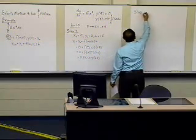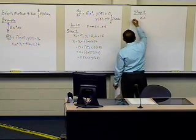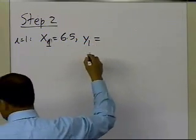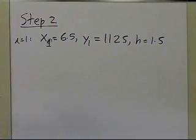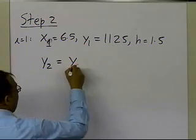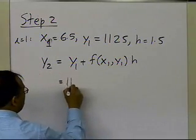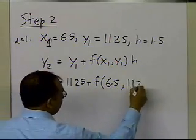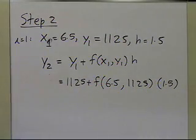So if we have step 2, we get x₀ is equal to, this is i equal to 1, it's corresponding to i equal to 1, so x₁ is 6.5, the corresponding value of y which we just obtained in the previous step is 1125, and h is of course 1.5. So we'll go back again and say, what is the Euler's formula for i equal to 1? y₂ is y₁ plus the value of the function at x₁, y₁ times h. What is y₁? 1125, plus the value of the function at x₁ which is 6.5, y₁ is 1125, times h which is 1.5. So we know everything about what we need to know in order to be able to solve this problem.